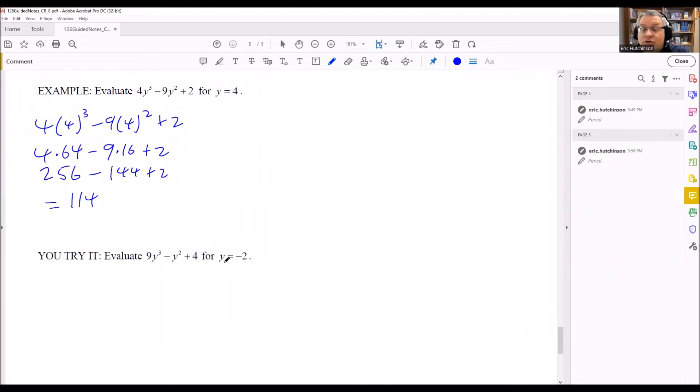So we're going to do 9 times negative 2 cubed. We have minus, we have negative 2 is going to go in there again, and then plus 4. Be careful with your minus signs here. In this case, we have a negative number that's being raised to an odd power. That means we're going to get a negative number as a result.